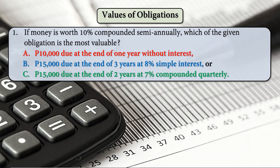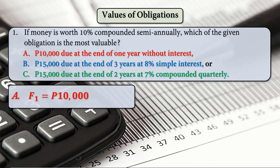Another example: if money is worth 10% compounded semi-annually, which obligation is the most valuable? We compare three investments. Letter A: 10,000 due at the end of 1 year without interest. Letter B: 15,000 due at the end of 3 years at 8% simple interest. Letter C: 15,000 due at the end of 2 years at 7% compounded quarterly.